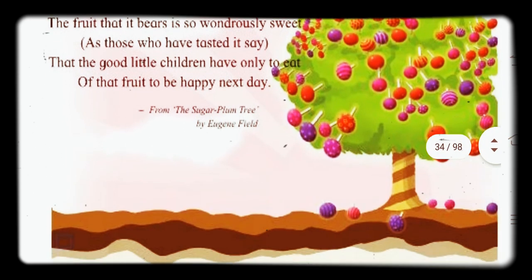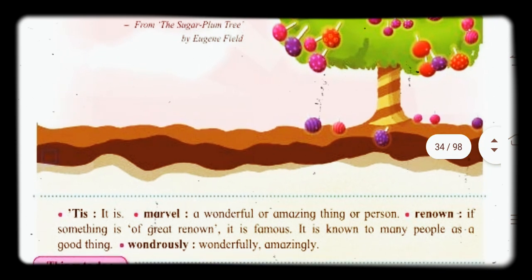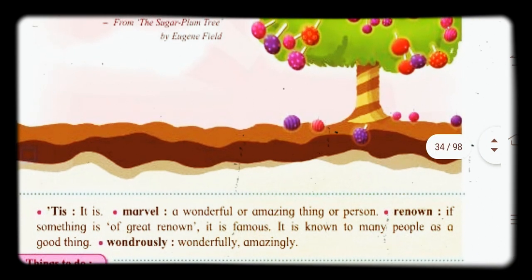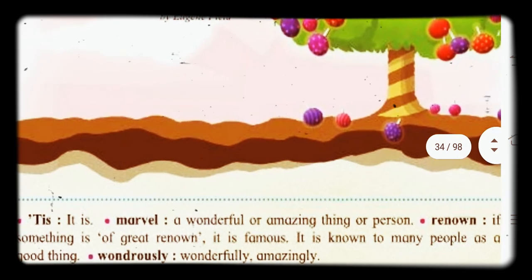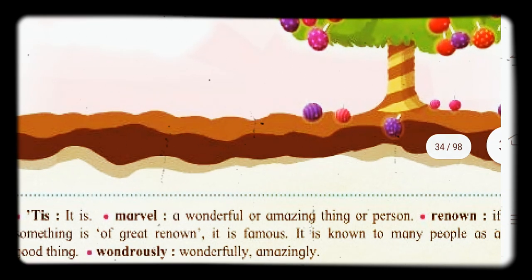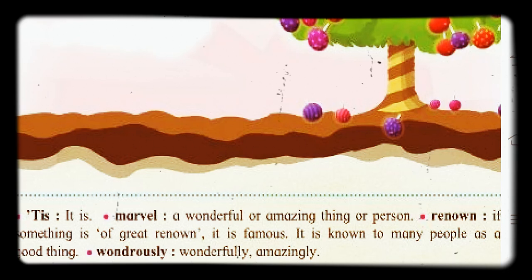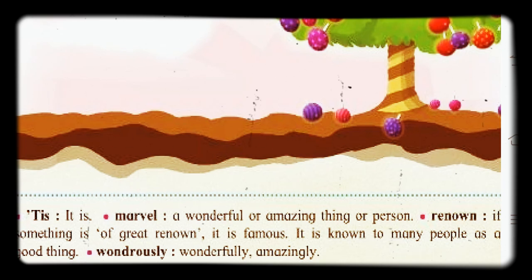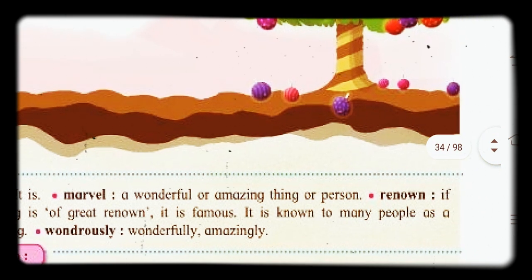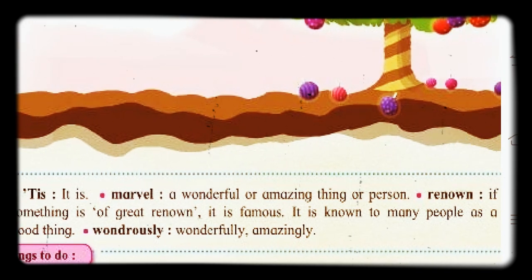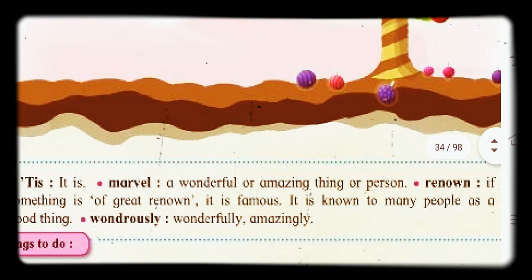Let's have a look at the new words. 'It's' is a contraction of 'it is.' Next word is 'marvel' — marvel means a wonderful or amazing thing or person. 'Renown' — if something is of great renown, it is famous; it is known to many people as a good thing.